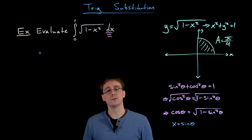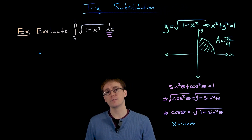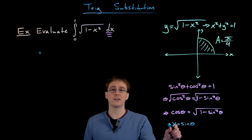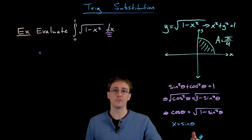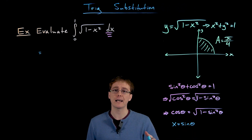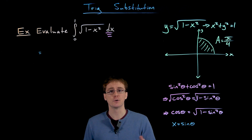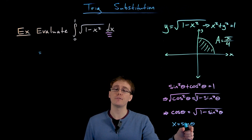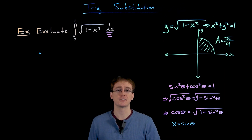These trigonometric substitutions are also sometimes referred to as inverse substitutions. For u-substitutions, we set our new variable u in terms of an expression of our old variable x. For these trig substitutions, we do the inverse of that — we set our old variable equal to some function of our new variable, in this case theta.